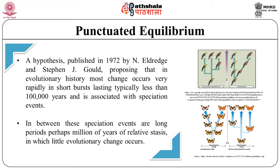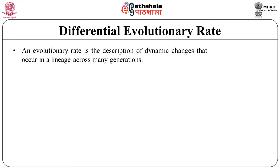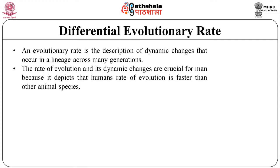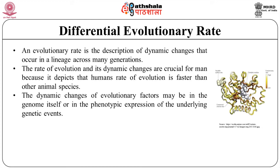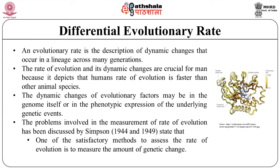Let's consider the differential evolutionary rate as an important parameter. An evolutionary rate is the description of the dynamic changes that occur in a lineage across many generations. The rate of evolution and its dynamic changes are crucial because it depicts that the human rate of evolution is faster than other animal species. The dynamic change of evolutionary factors may be in the genome itself or in the phenotypic expression of the underlying genetic events. The problem involved in measuring the rate of evolution was discussed by Simpson in 1944 and 1949. One satisfactory method is to measure the amount of genetic change; however, this is quite impractical due to obvious difficulties.